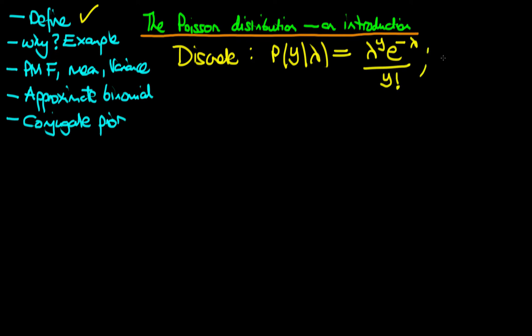To be clear, we're talking about the circumstance when y is 0, 1, 2, 3, and so on. So y measures a non-negative integer.